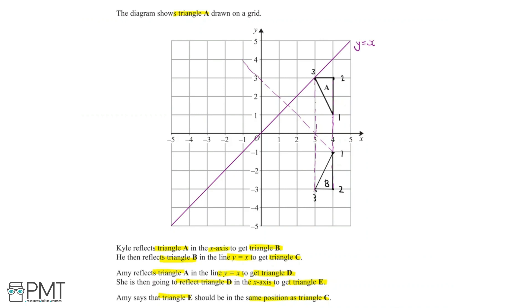Counting the diagonals from point 1 to the line y equals x, we travel two and a half diagonals, then do the same on the other side to find its reflection. For point 2, we count three diagonals to the line and do the same on the other side — placing point 2 up here. For point 3, we also count three complete diagonals, then the same on the other side — giving us point 3. We can now join the dots together and label this new triangle C.